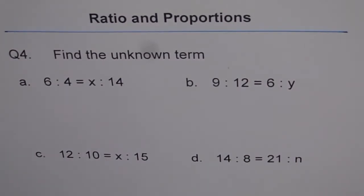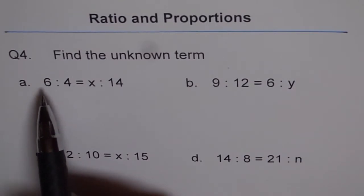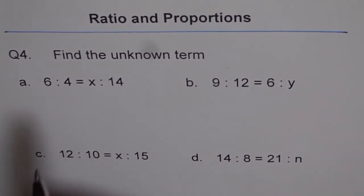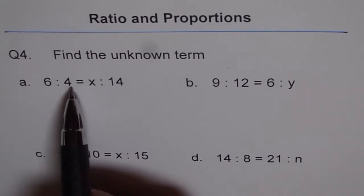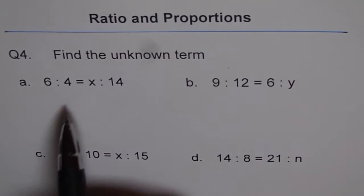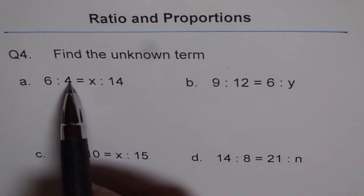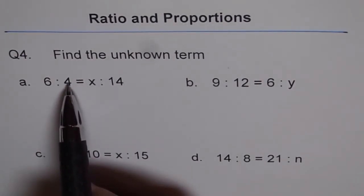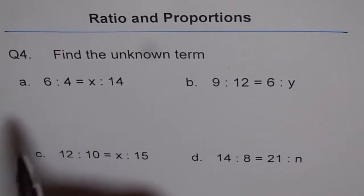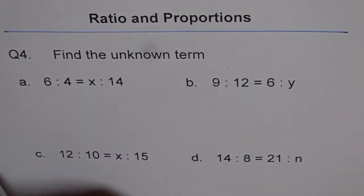So let me do A and B now. Here 6 is to 4 equals to x is to 14. We are given two numbers related: 4 and 14. So what could be the scale factor between 4 and 14? 4 times 3 is 12 and 4 times 4 is 16 but not 14. So that means there is no direct scale factor.